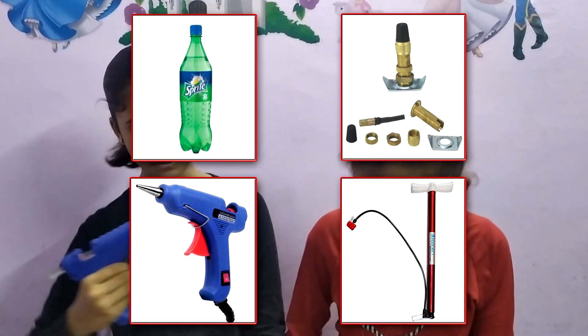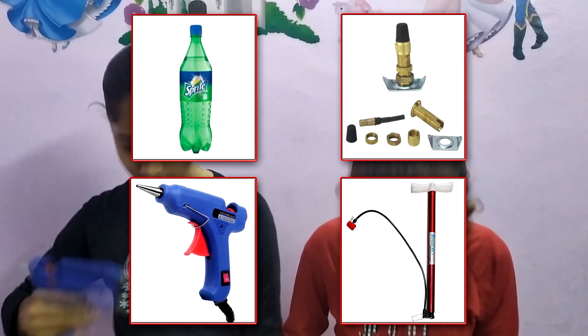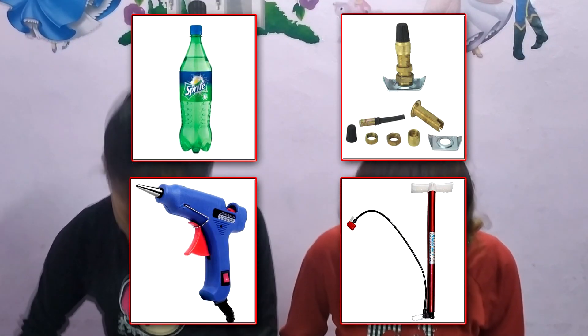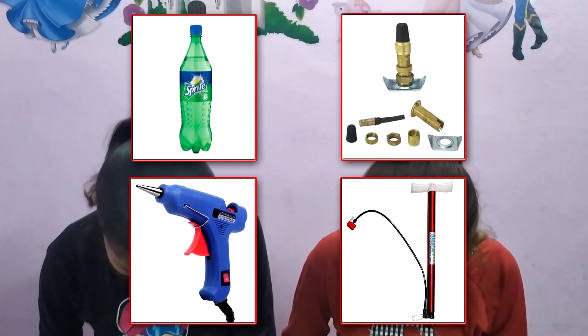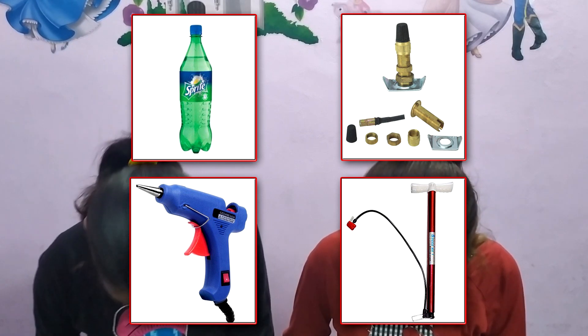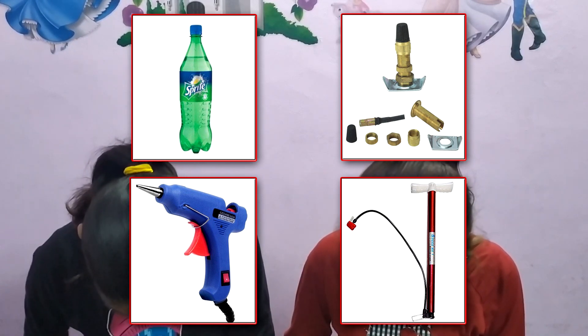The needed materials are: one plastic bottle, one set of bicycle tube valve, a glue gun, and a cycle pump.